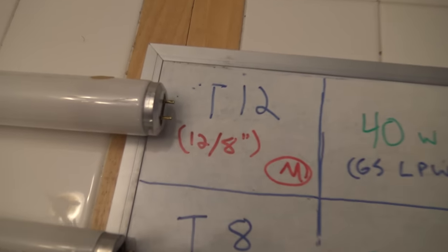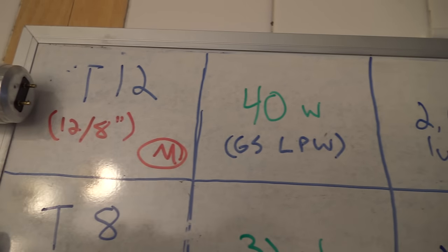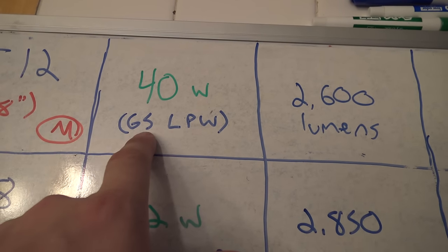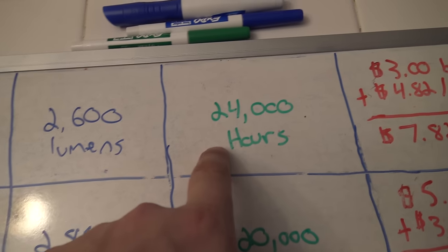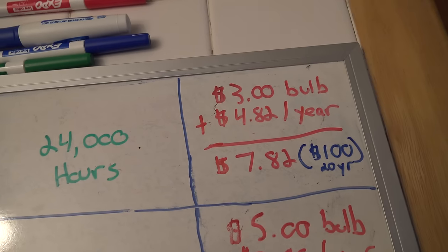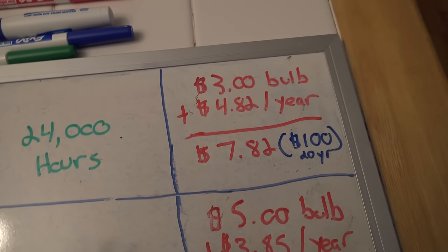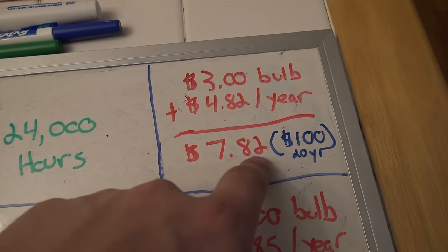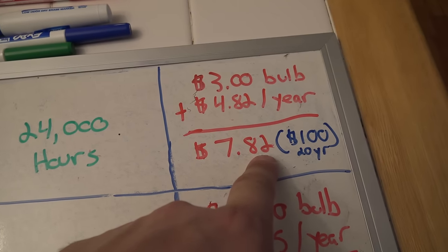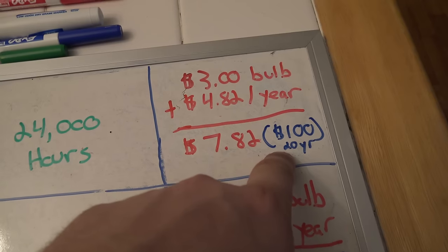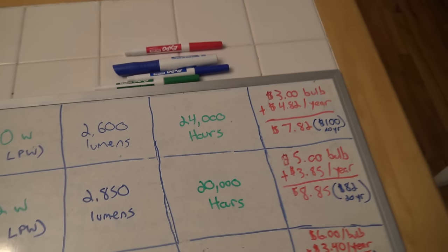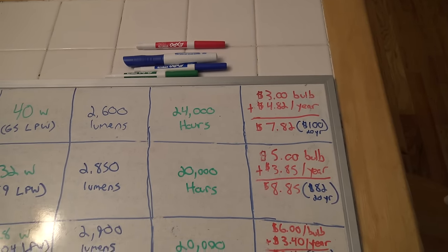As you would expect, the T12 performs the worst. It takes 40 watts. It gives you around 2,600 lumens, which is 65 lumens per watt. You get 24,000 hours out of it. The bulb itself, they're really cheap because no one uses them anymore. And then the running cost is $482 per year for a total of $782 for one year of operation plus purchase. Or over a 20-year time span, it would cost you $100 to operate that.